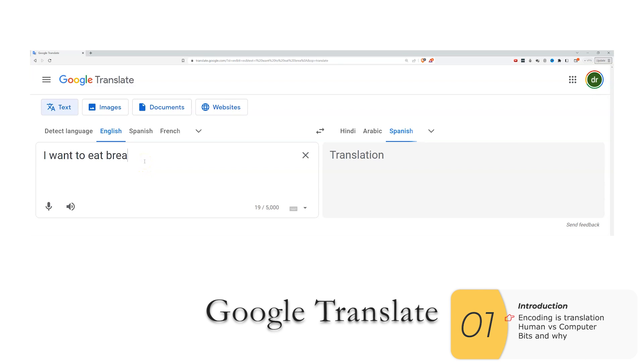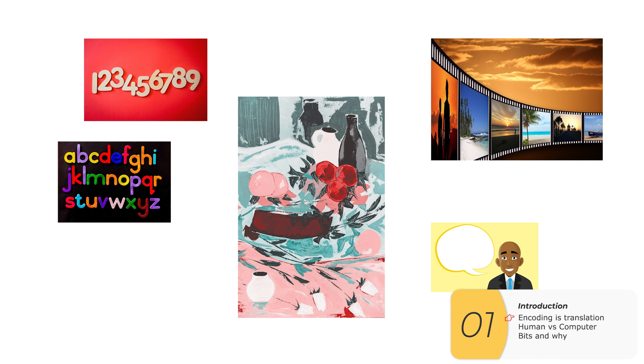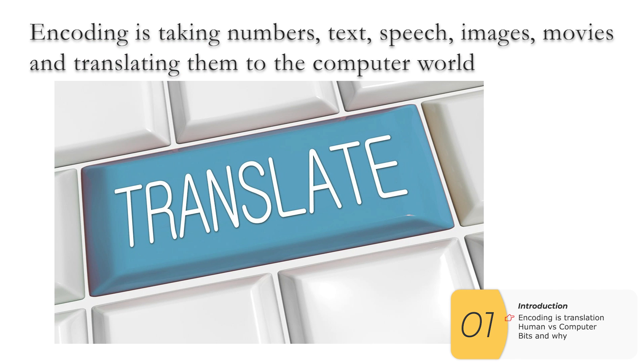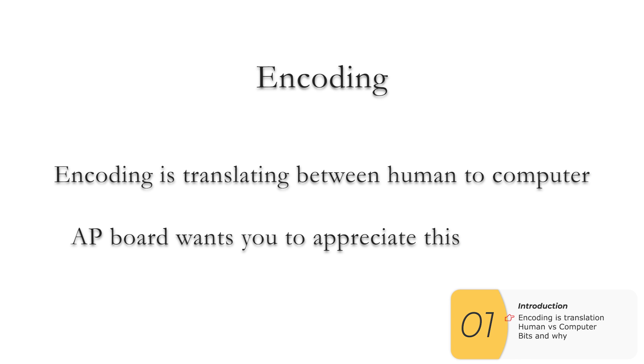So here I have an example of Google Translate, translating from English to Spanish, Arabic, and Hindi. And if you understand that, then you basically understand what encoding is. Encoding is when I take numbers, letters, speech, images, and video, and I translate that into the computer world. So again, encoding is basically translating between human and computer.